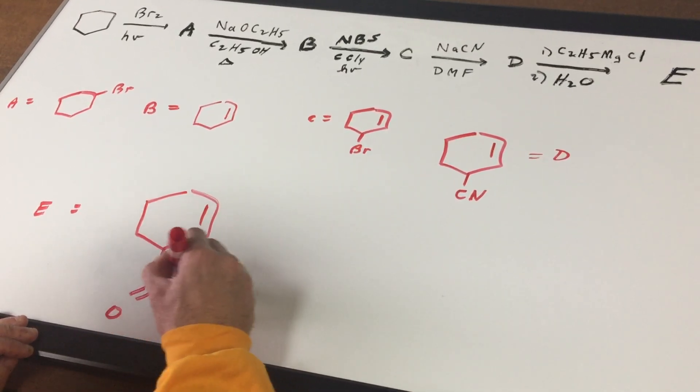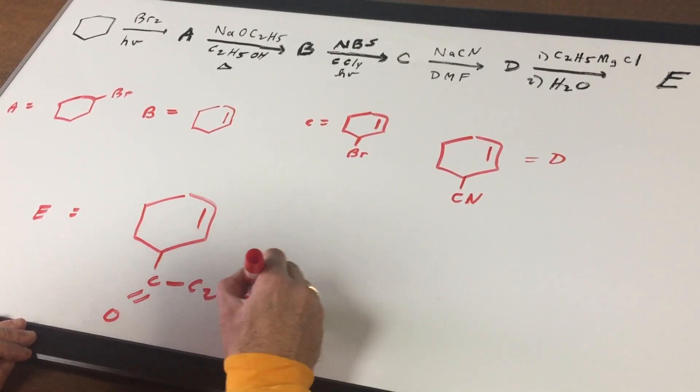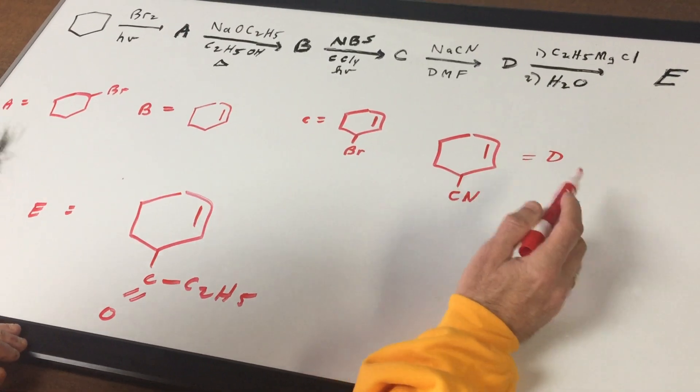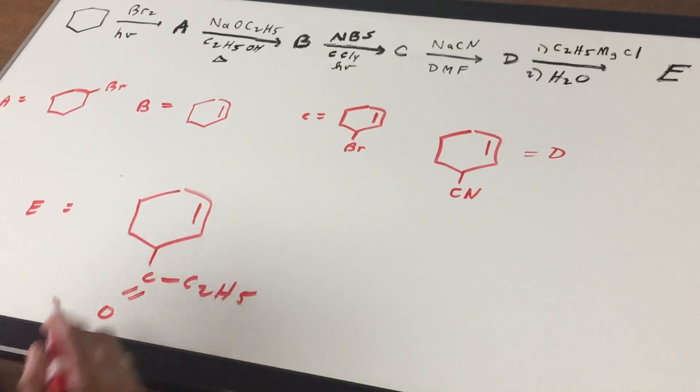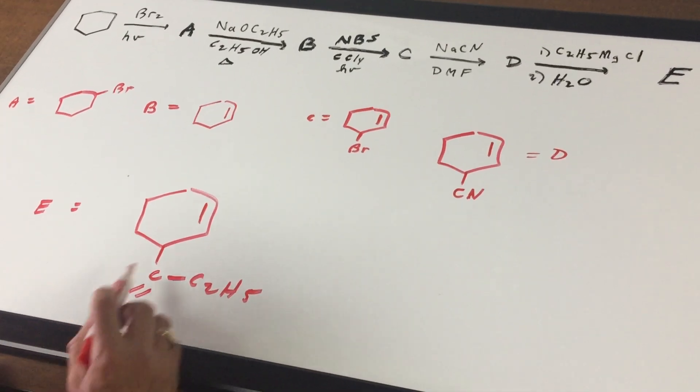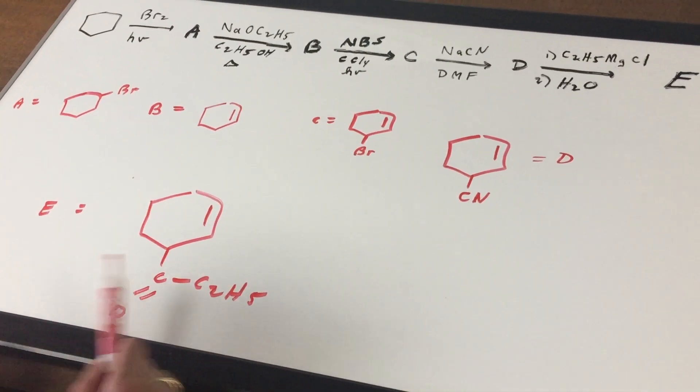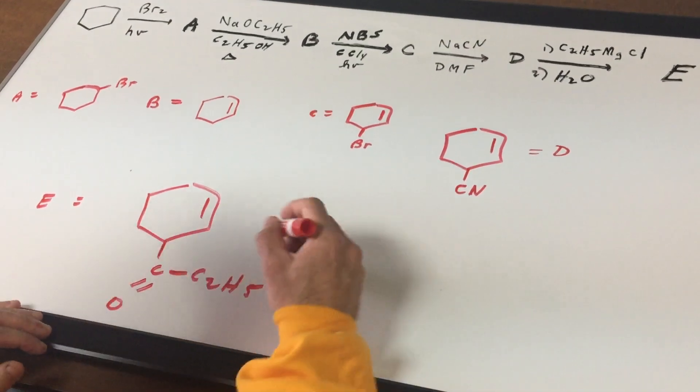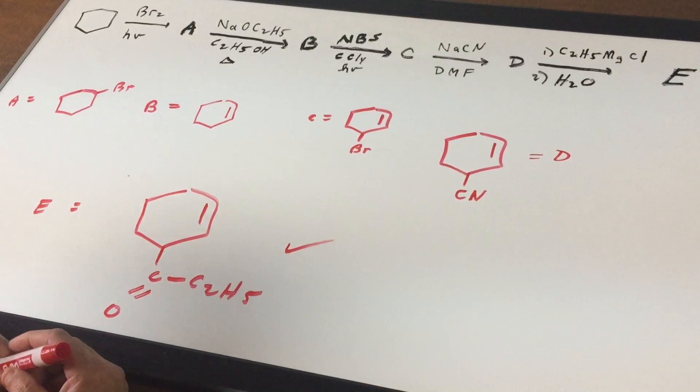So in the mechanism of the reaction, what we would do is we would set the nitrogen up for a leaving group. It would come off as ammonia. So as you can see, the final product would be this molecule. Notice we have a ketone group and we have a cycloalkene. So this would be the final product.